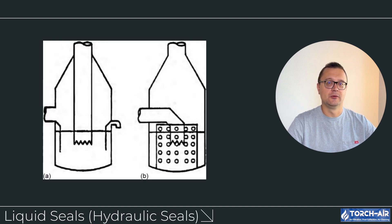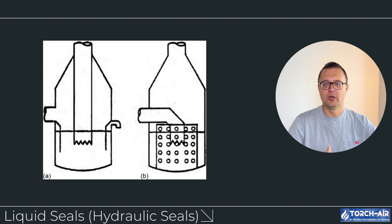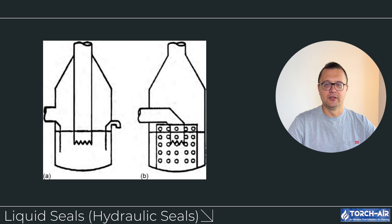Liquid seals, also known as hydraulic seals, are used to maintain air tightness in the scrubber while allowing gas to pass through. It's essentially a pool of liquid that acts as a barrier, preventing gas from escaping without being treated. Best for systems requiring air tightness or where back pressure management is critical. They are simple to operate and maintain, and provide a passive sealing mechanism that doesn't require moving parts. Liquid seals are effective in low-maintenance environments or when continuous flow is required. Consideration: while they help manage gas flow and prevent leaks, liquid seals don't offer the same level of particle or gas absorption as nozzle systems.